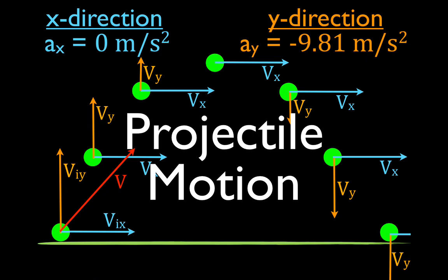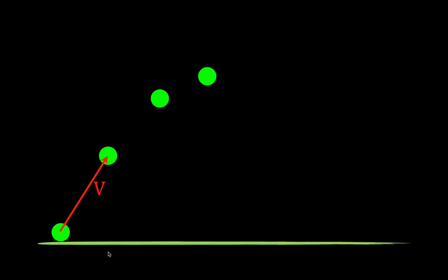In today's video, I'm going to go over a qualitative description of two-dimensional projectile motion when an object is projected with some initial velocity at some angle above the horizon. This is the situation we have: the object is projected with some initial velocity at some angle above the horizon, and it leaves the ground and follows a nice parabolic path. We want to talk about why it follows that parabolic path.